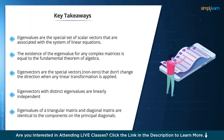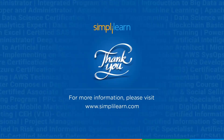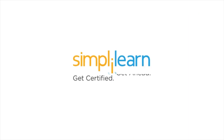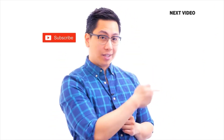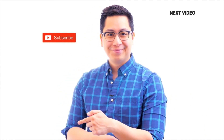Key takeaways: Eigenvalues are the special set of scalar values associated with the system of linear equations. The existence of the eigenvalue for any complex matrices is equal to the fundamental theorem of algebra. Eigenvectors are special non-zero vectors that don't change direction when any linear transformation is applied. Eigenvectors with distinct eigenvalues are linearly independent. Eigenvalues of a triangular matrix and diagonal matrix are identical to the components on the principal diagonals. Thank you.